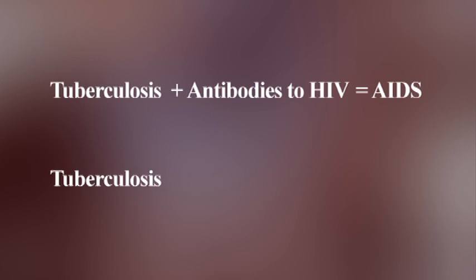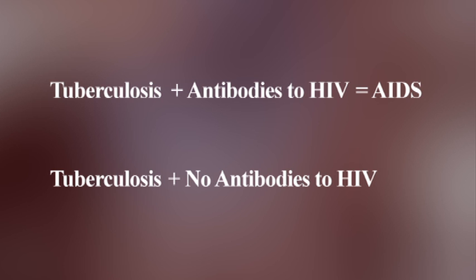They called it a disease — they said people are dying of a disease. Simply spoken, if you have tuberculosis and an antibody against HIV, then we call it AIDS. If you have tuberculosis and no antibody against HIV, we call it tuberculosis, as we used to. It's an old disease with a new name when we find antibody to the virus.